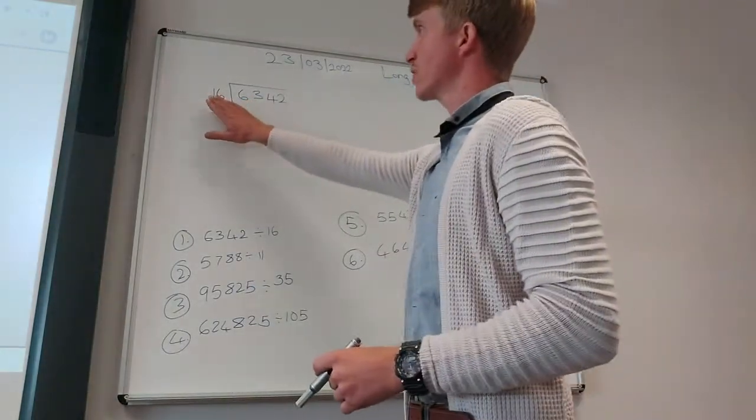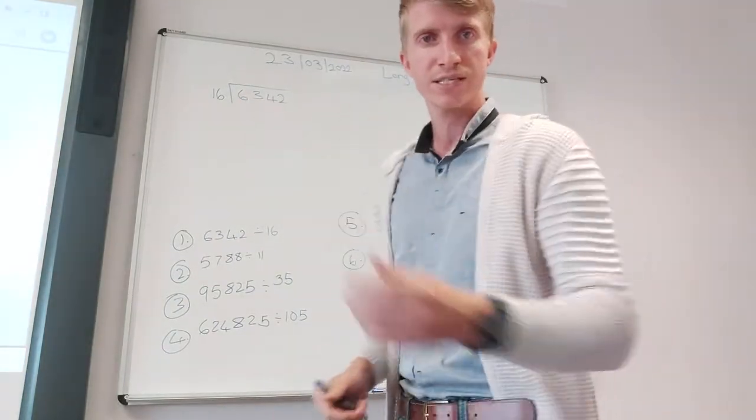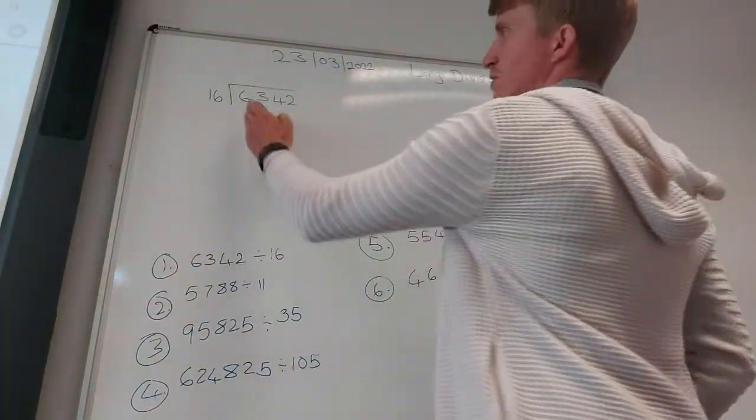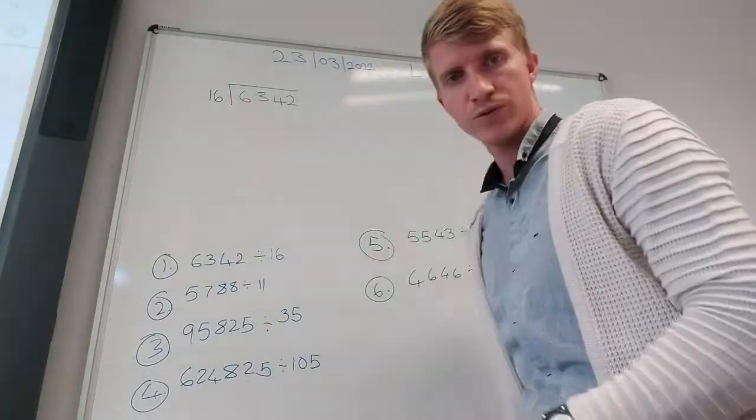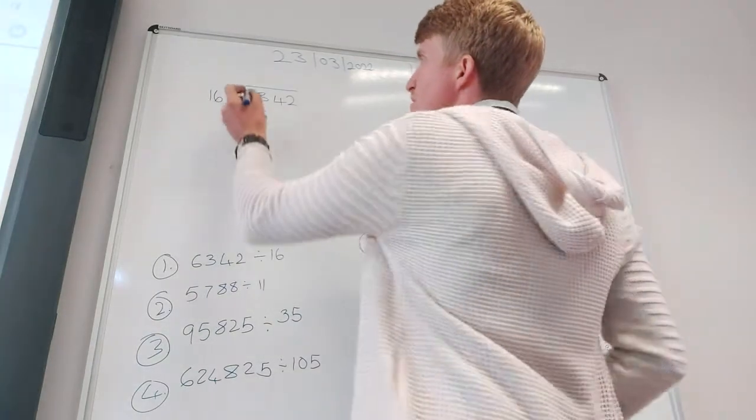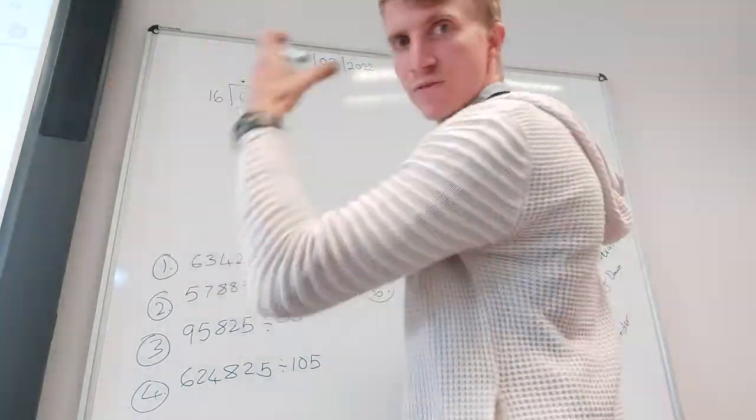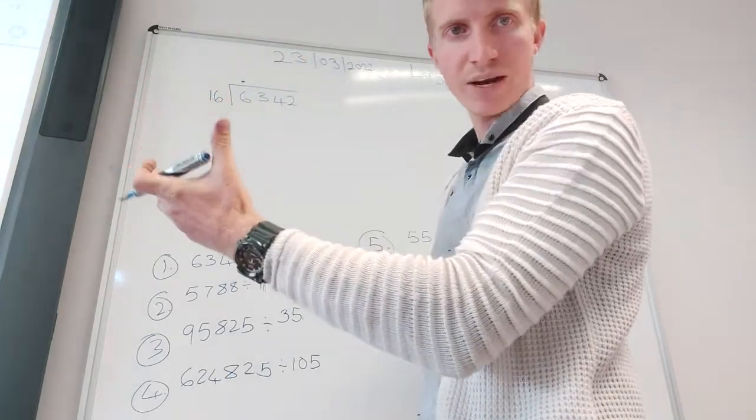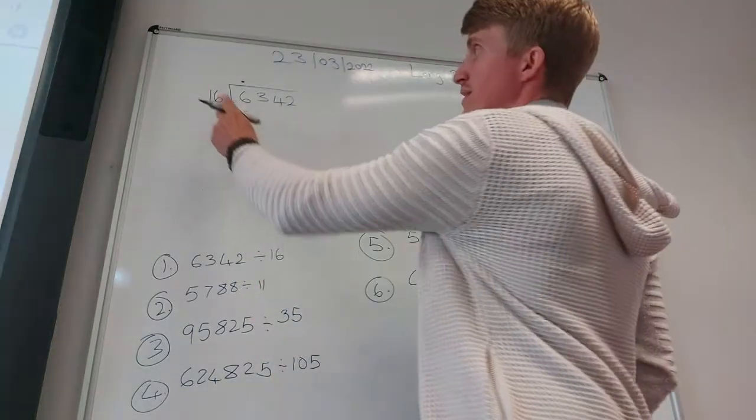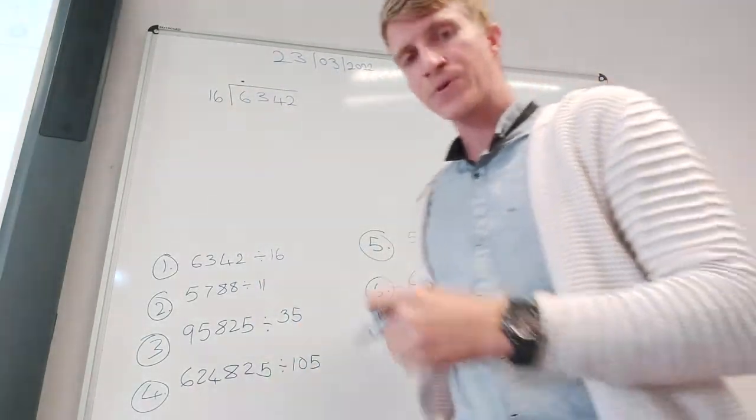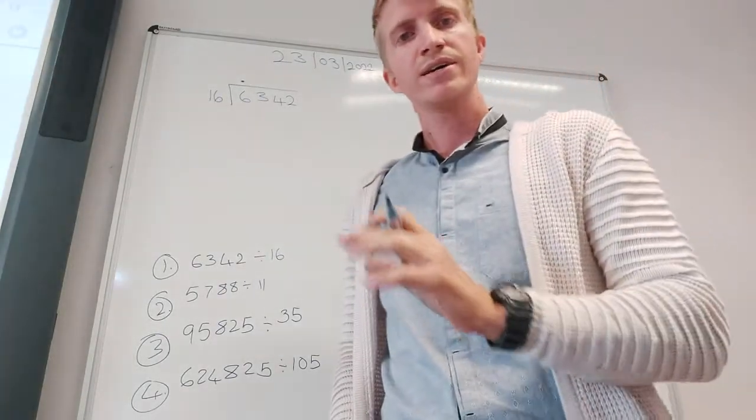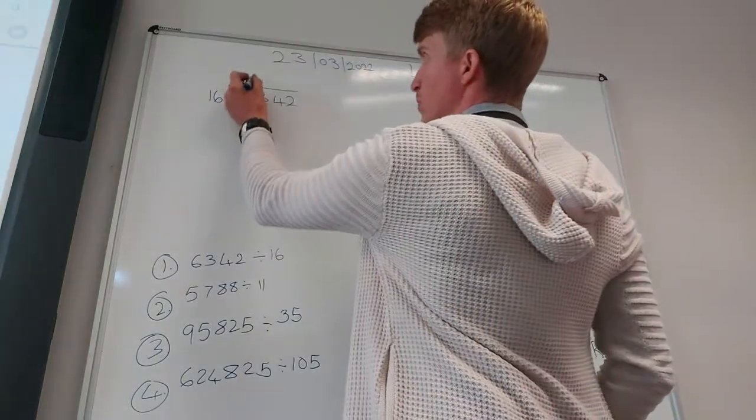So I've got 16 as my divisor. 16 on the outside, then I've got 6342. My first question is: can 16 go into 6? That is obviously no. So I can make a dot because it's the first number. Can 16 go into 63? Yes it can. How many times? It's going to be roughly 3 with some left over, so we'll put down a 3.